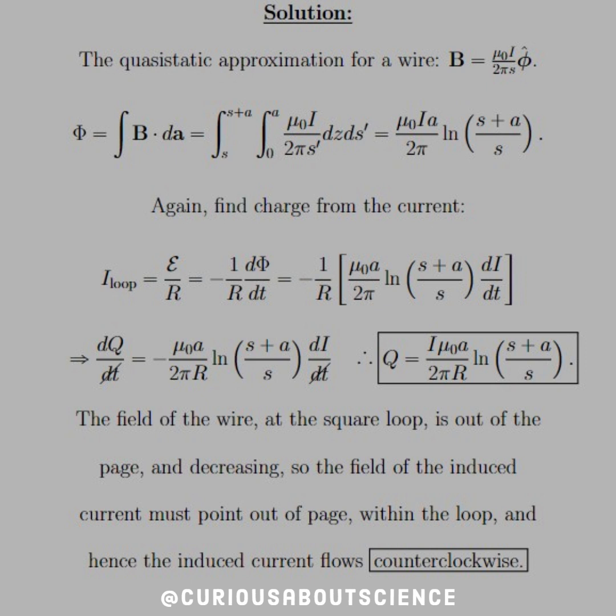So we say then that the flux, which is the surface integral of the magnetic field, well, if we plug the magnetic field in, we see that in the DS direction, we go from S, the distance S, up to S plus A, which is the top of the loop versus the bottom of the loop. And then horizontally, which we'll call Z, we go from 0 to A. So if we plug those in, and we change the S to S prime in the field just to denote they're different, now we see that we end up with a flux of mu naught IA over 2 pi LN of S plus A over S.